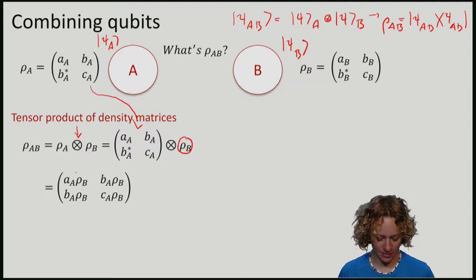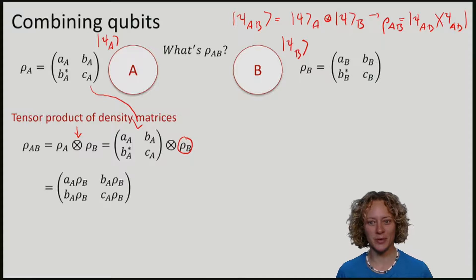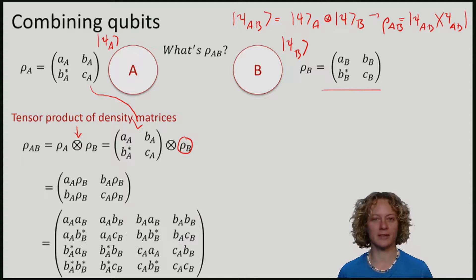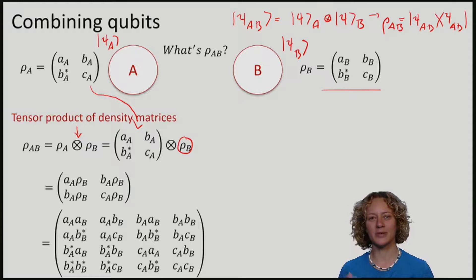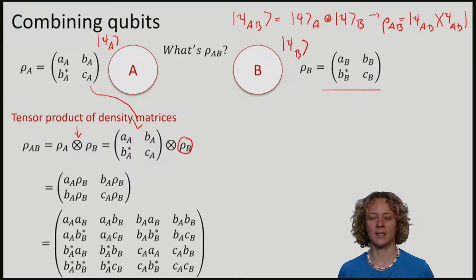What we do is take the density matrix of B and tag it onto all of the coefficients of A. So what this looks like is that I have tagged rho B onto all of the coefficients. Let me now spell out what this means in terms of the matrix rho B. So if I insert rho B here, what we get is a big matrix rho AB. This is how we combine two density matrices for A and B into a big density matrix for A and B together. Just like for the tensor product for vectors, the tensor product of matrices satisfies nice properties, namely it's distributive and associative. You can find this explained in detail in the lecture notes.